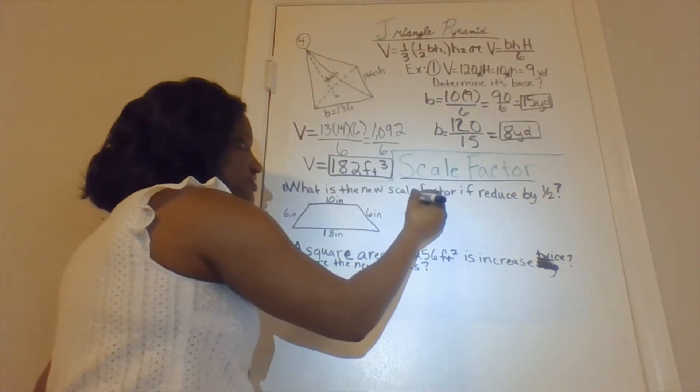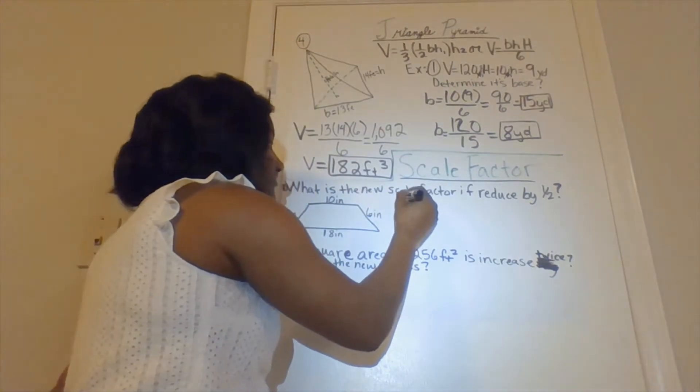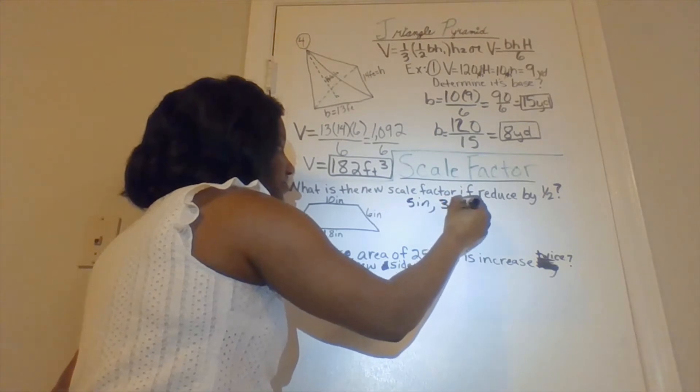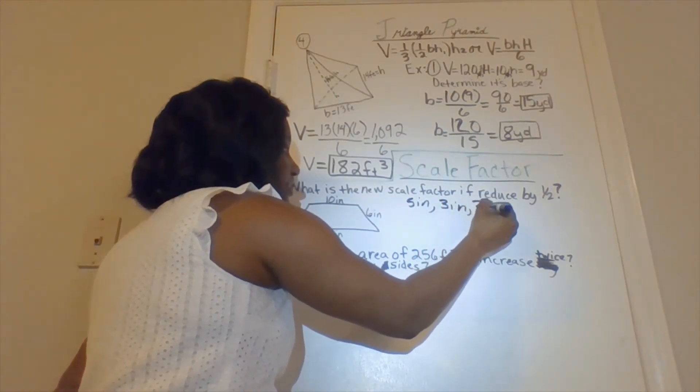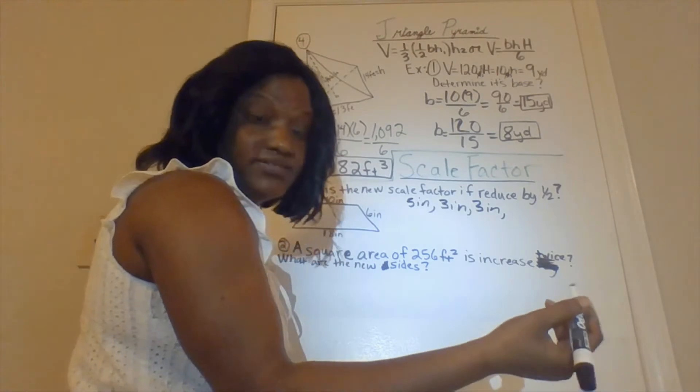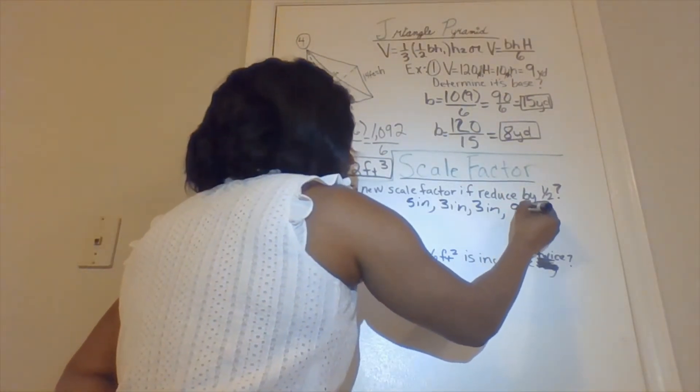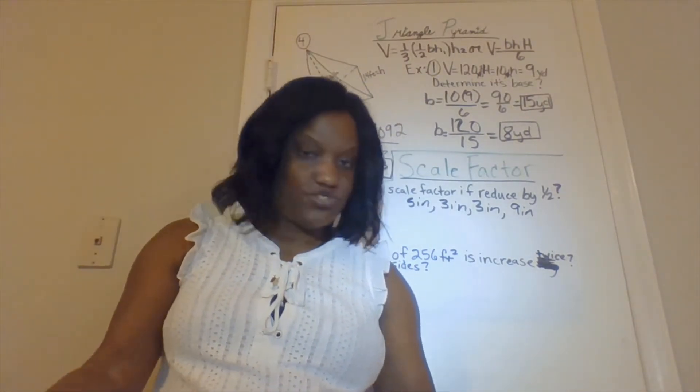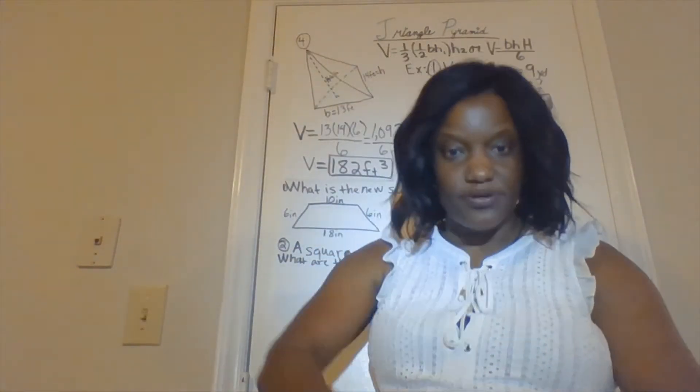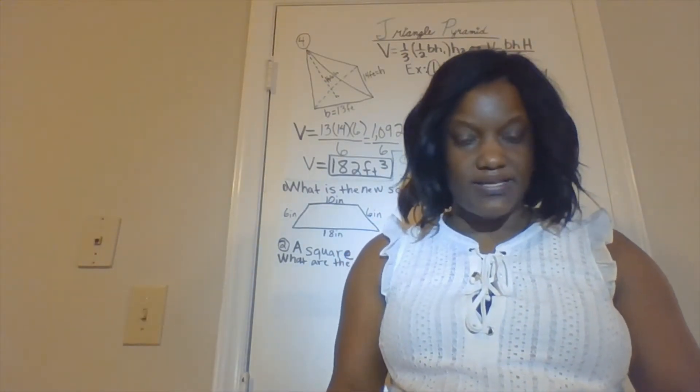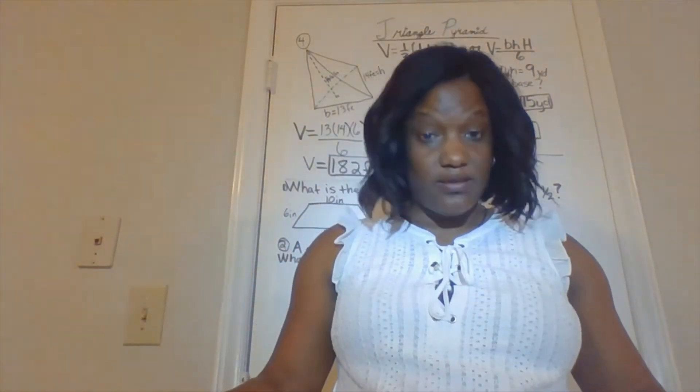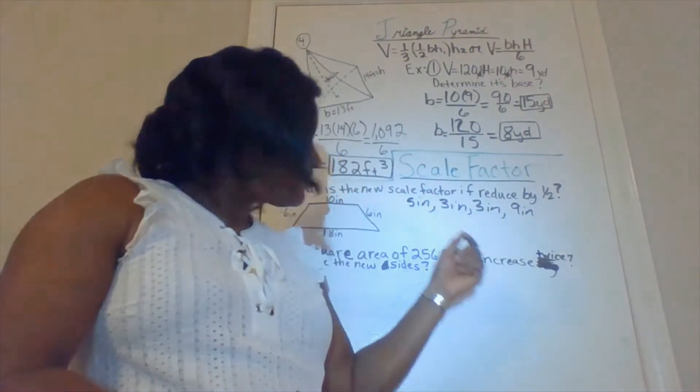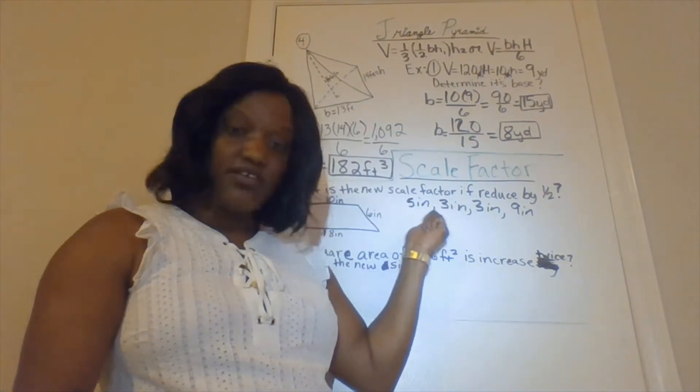So 10 is now what? Half of 10 is 5 inches. 6 is 3 inches. 3 inches. And half of 18 is 9 inches. Those are my new dimensions. They didn't ask you for the perimeter. If they would have asked you for the perimeter, you would have added up all the sides. They didn't ask you for the area. They didn't ask you for any of those things. All they wanted you to do was find the scale factor if you reduce it.